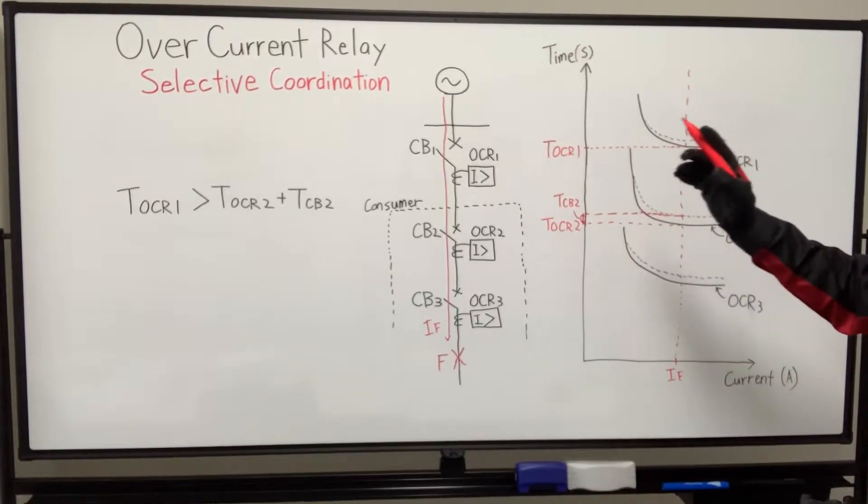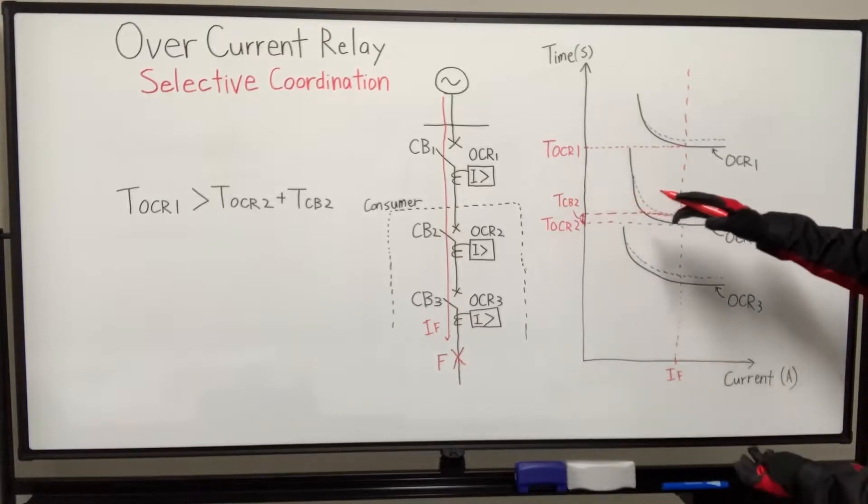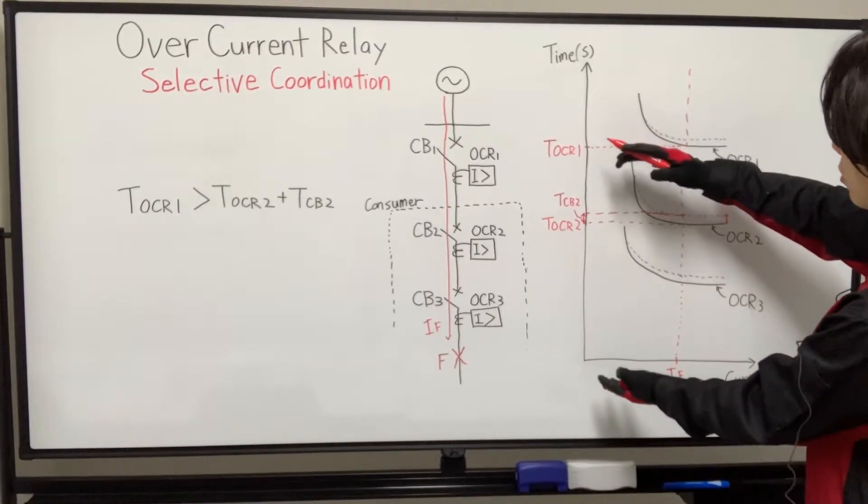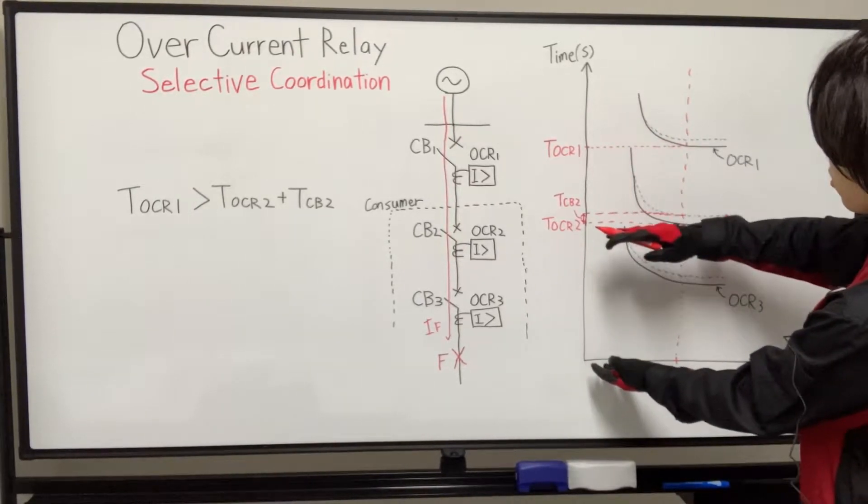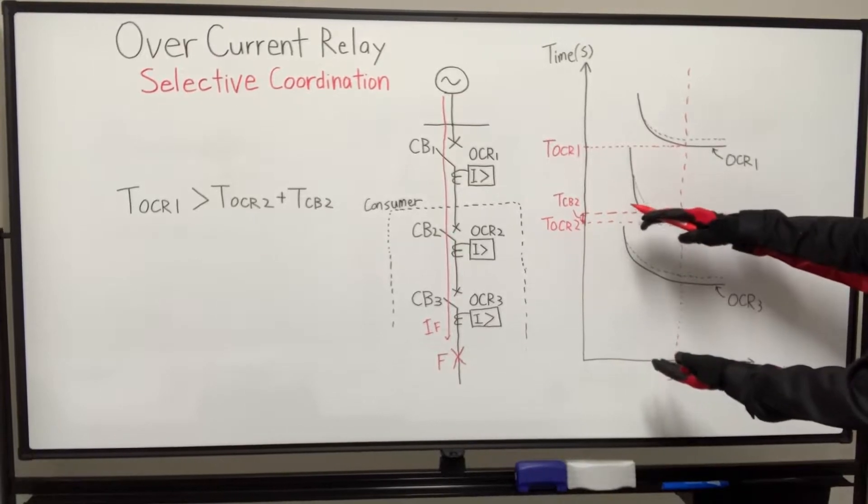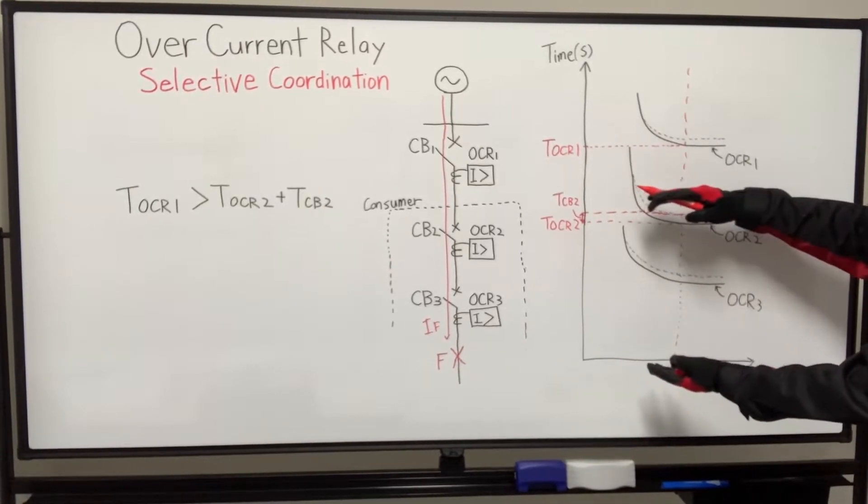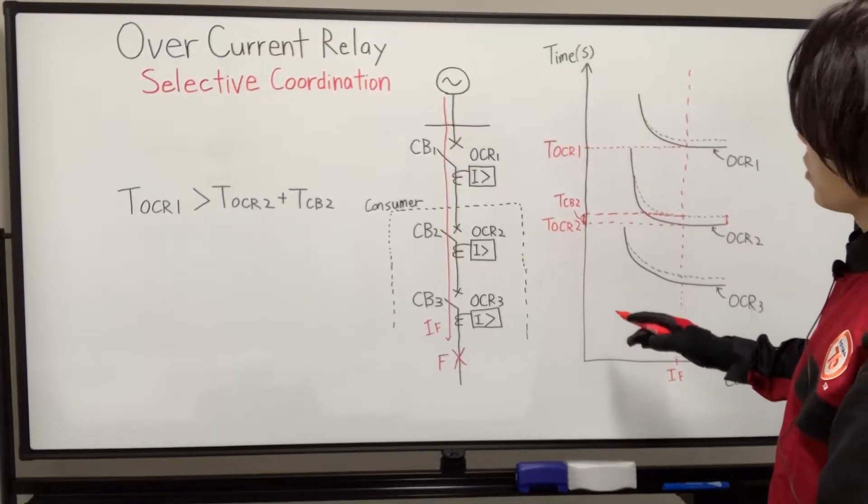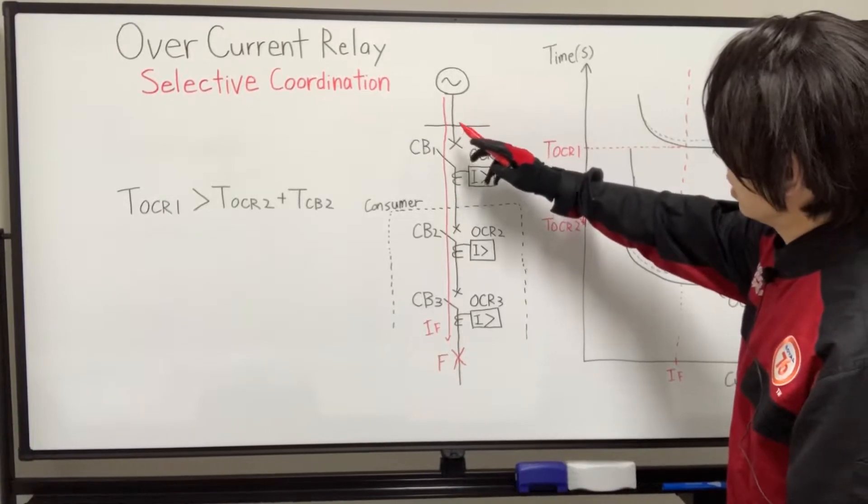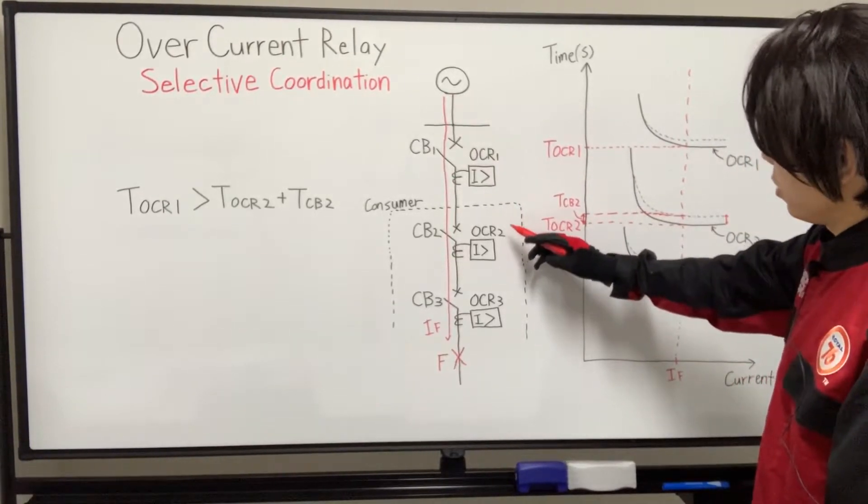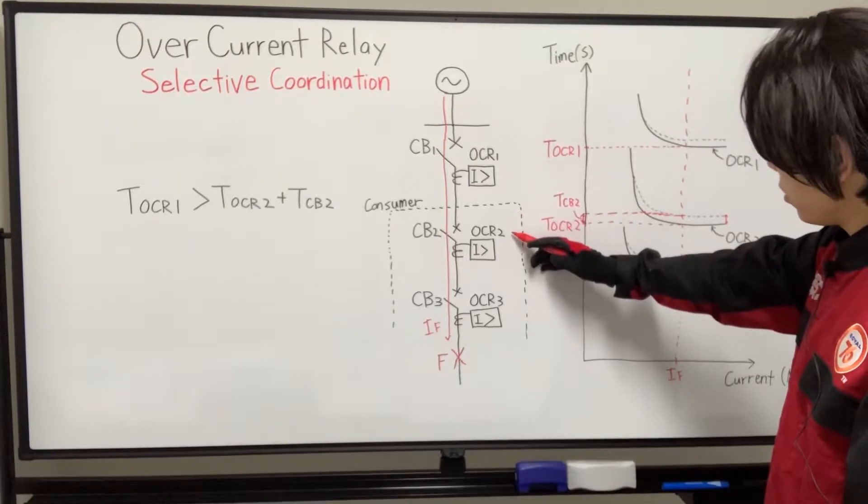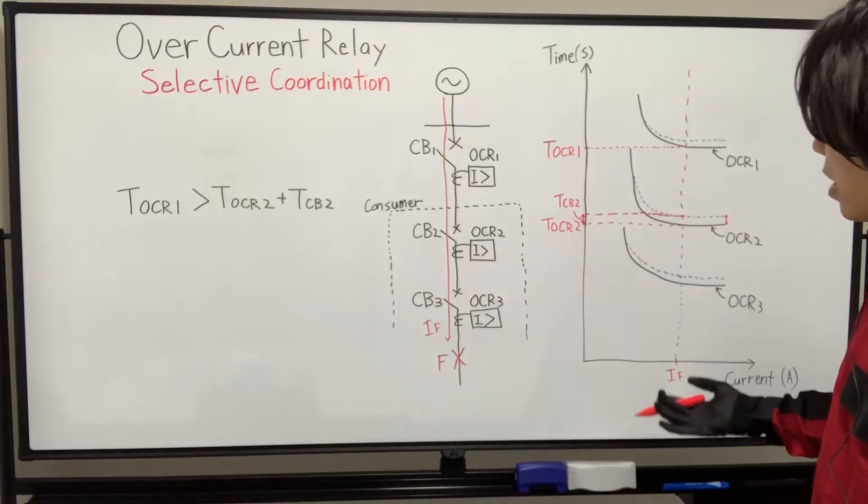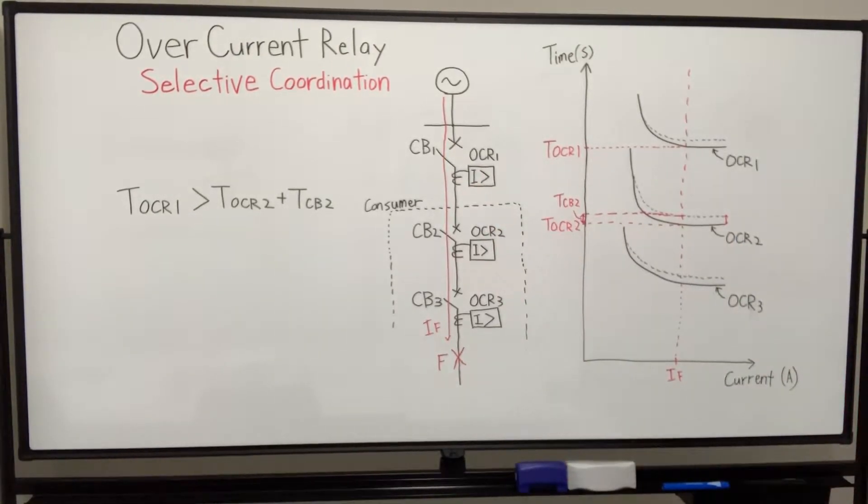So overcurrent relay 1's operating time should be longer, it should be greater than overcurrent relay 2's operating time plus circuit breaker 2's interrupting time. So that is the relationship of overcurrent relay 1 and overcurrent relay 2. Similarly, overcurrent relay 2 and overcurrent relay 3 should have the same relationship of this equation.